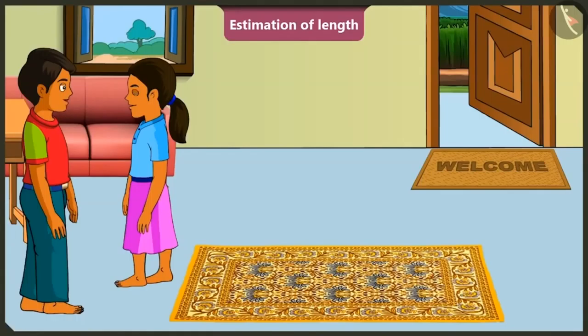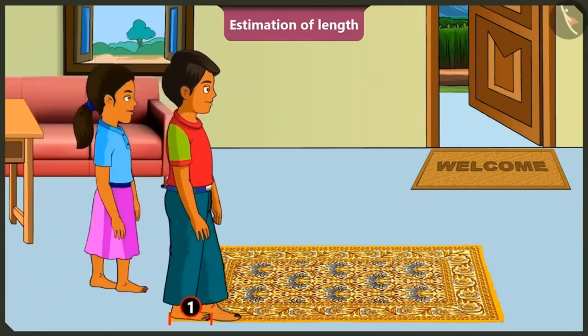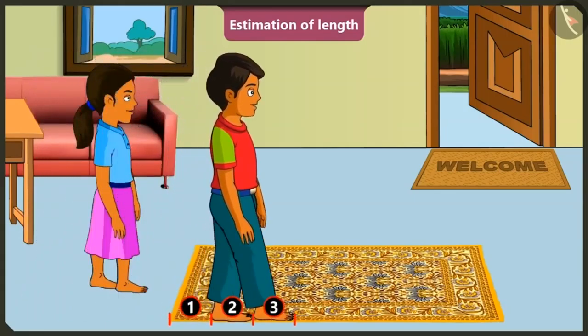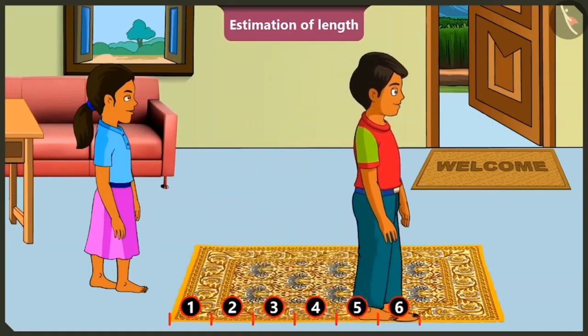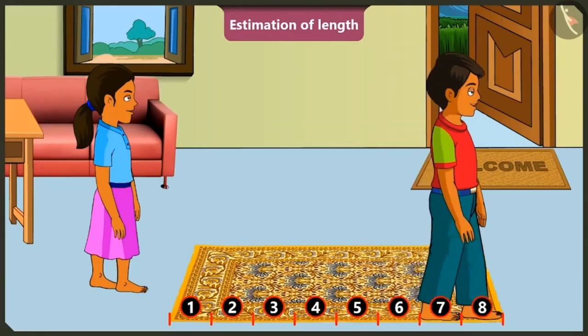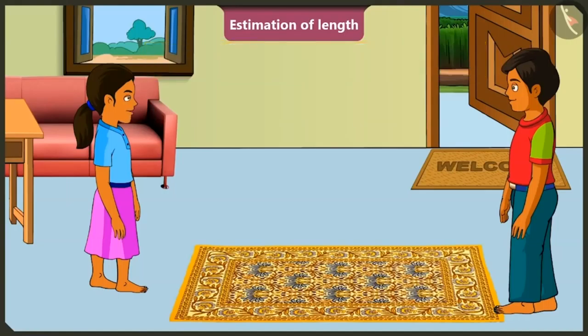Now, let me show you a magic. Magic? Yes. Now, I will measure this carpet with my feet. One, two, three, four, five, six, seven and eight. Hey, the length of this carpet is only eight feet. Brother, length of this carpet has been reduced by your magic.